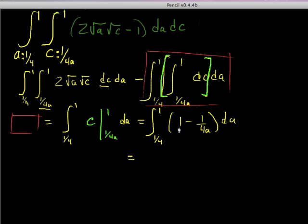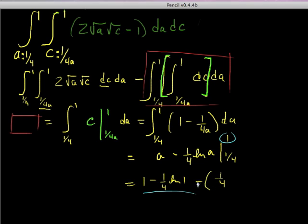The integral of one is just a, and then this is minus 1/4 natural log of a, evaluation at one subtract off evaluation at a quarter. So this is one minus 1/4 ln of one, and we're going to subtract evaluation at a quarter, which is 1/4 minus 1/4 natural log of a quarter.